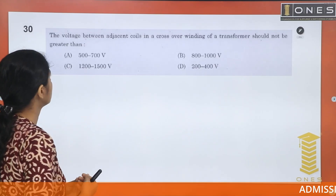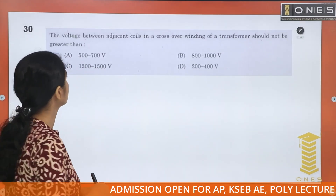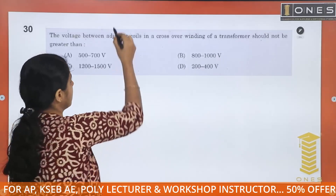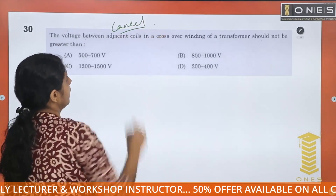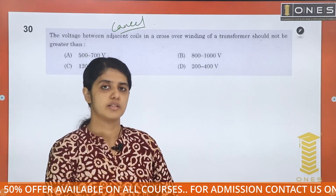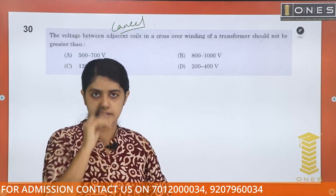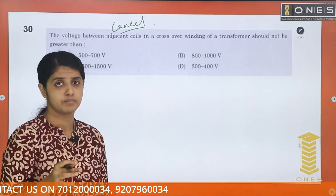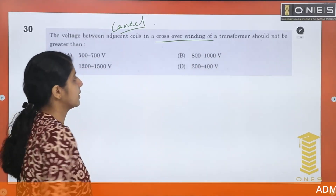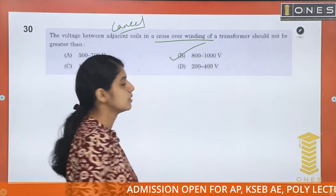Question number 30: The voltage between adjacent coils in a crossover winding of a transformer should not be greater than? This is a canceled question. Transformer windings include helical, crossover, and sandwich types, as well as core-type and shell-type windings. The answer referenced is 2,000 volts.